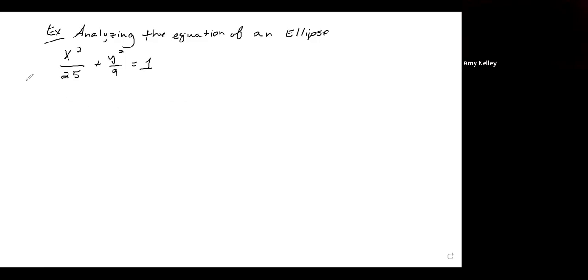One thing to note is that the form of this equation is x squared over a squared plus y squared over b squared equals 1. This tells us that our major axis is along the x axis and our minor axis will fall along the y axis.